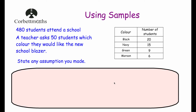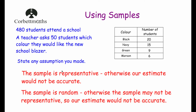If the sample isn't representative then it may not be accurate. Our first assumption is the sample is representative, otherwise our estimate would not be accurate. Our second assumption is that the sample is random, otherwise the sample might not be representative and therefore our estimate wouldn't be accurate either.